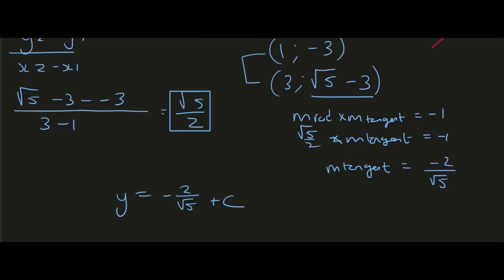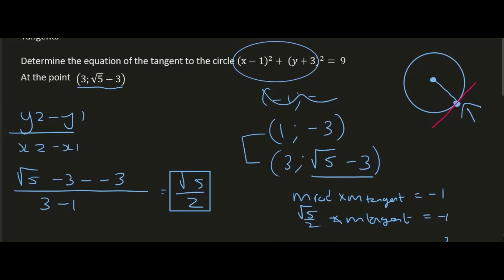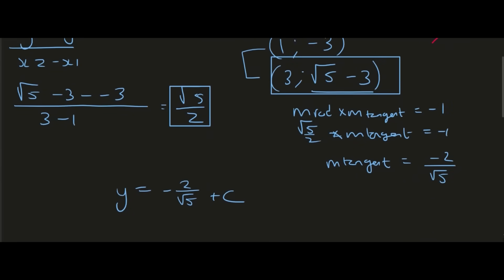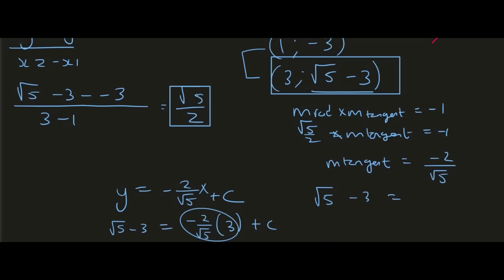To find c, plug in the point (3, √5 - 3): √5 - 3 = (-2/√5) × 3 + c, which gives us -6/√5 + c. Solving for c, rounding to 1.92 — not the nicest of values. So the final equation for that tangent is y = (-2/√5)x + 1.92.